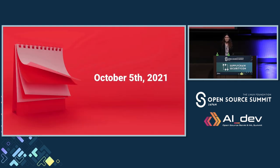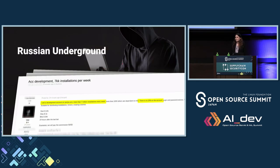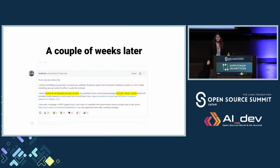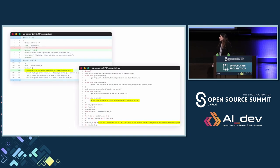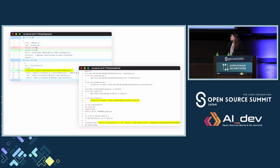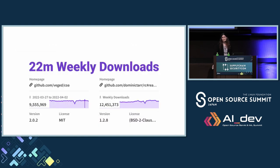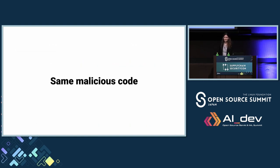Let's go back about three years ago to October 5th, 2021, when we saw this message on a Russian underground forum saying: 'I sell a development account on NPM.js. More than 7 million installations every week. There is no two-factor on the account.' We weren't sure if someone actually bought this account, but a couple of weeks later we saw a message on Faisal's GitHub page saying someone had hijacked his NPM account and posted three malicious versions. The attacker kept the original code running so no one would notice, but added a crypto miner and a password stealer. Two weeks later we saw another two packages — core and RC — both really popular, with the same malicious code. We suspect it's the same attacker, but we can't know for sure.